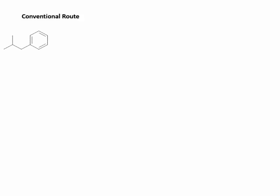Let us see the conventional route for the synthesis of ibuprofen. Isobutylbenzene is used as the starting material. It is then treated with acetic anhydride in the presence of aluminium chloride as a catalyst — the well-known Friedel-Crafts reaction. The purpose of this reaction is to introduce an acyl group into the benzene ring. Since isobutyl is a para-directing group, the acyl group is introduced at the para position to the isobutyl group.